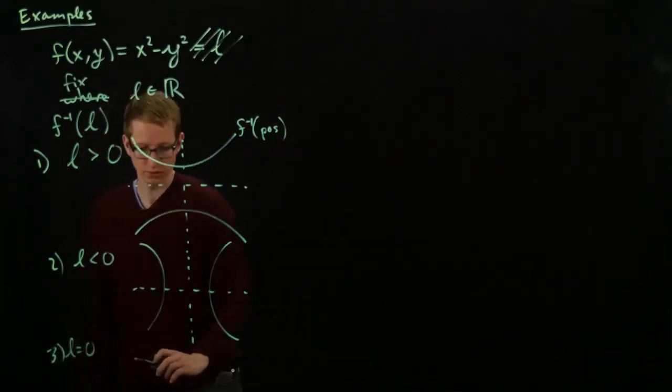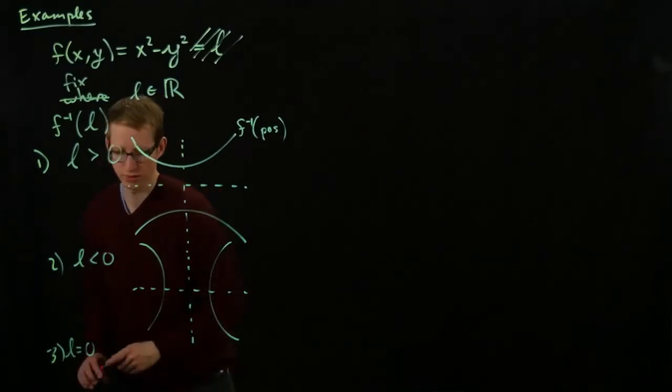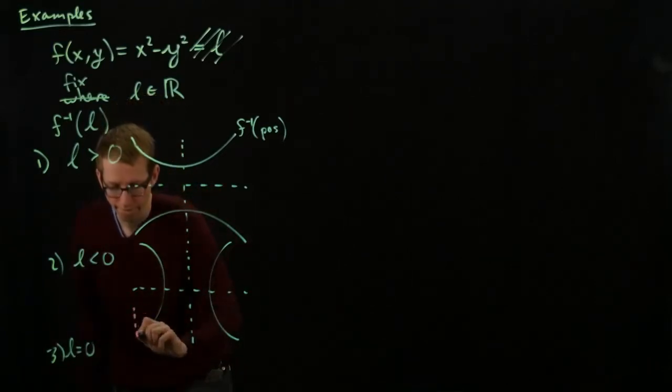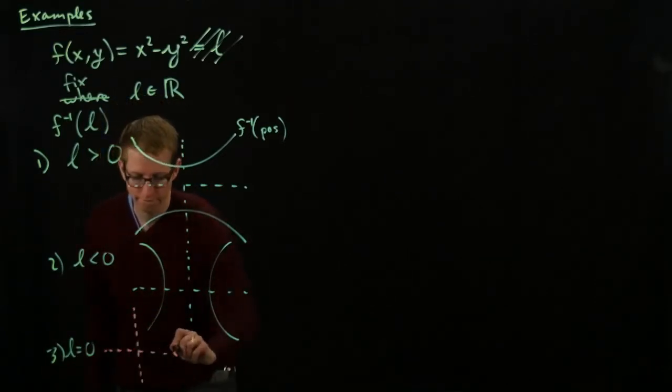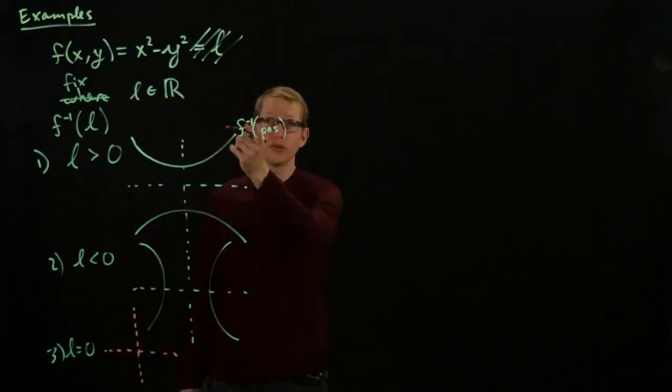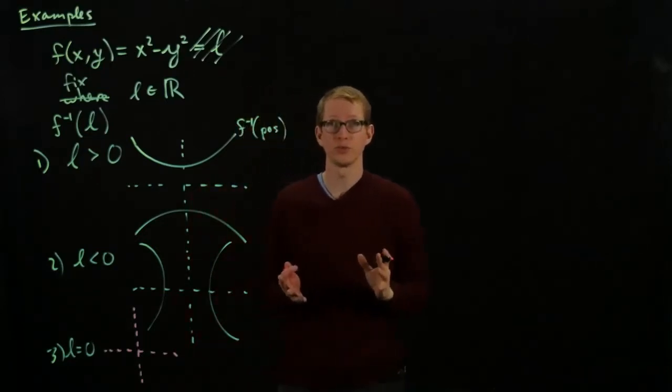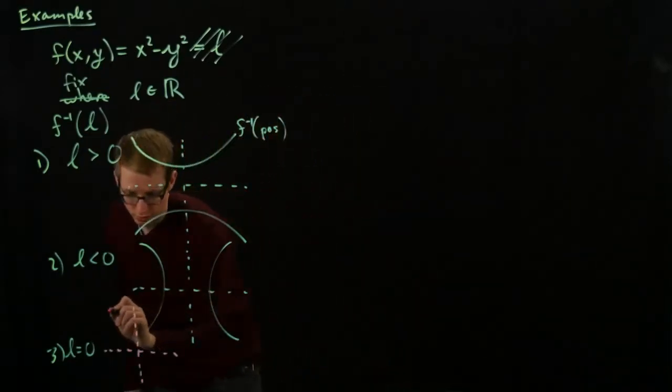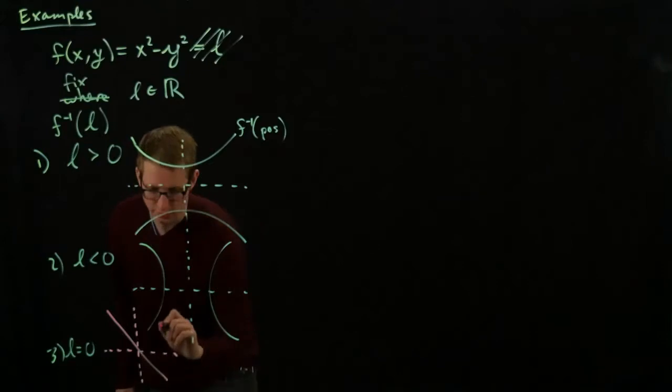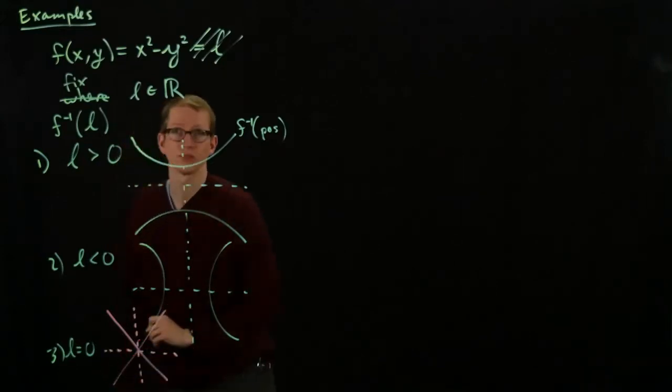And when L equals 0, let me draw this a little bit differently because I want to isolate it. What we get is x squared equals y squared, and that's the same as the equation x equals y if we have absolute value signs. So that gives us the following subset. So it looks just like an x.